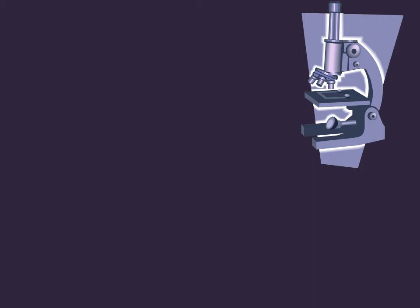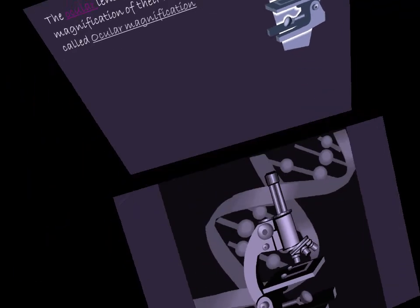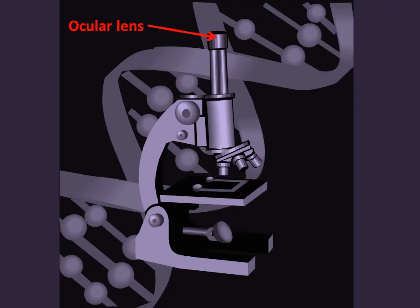Now the second component of magnification is the ocular magnification, which is determined by the ocular lens. Just for reference, this is the ocular lens. Some microscopes have one, some have two. Never seen a microscope with three, but then again, I've never seen a person with three eyes. This is the part where you directly put your eyes on to look at the microscope—it's the closest lens to you.